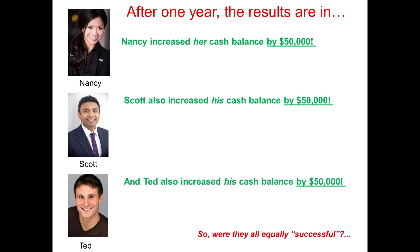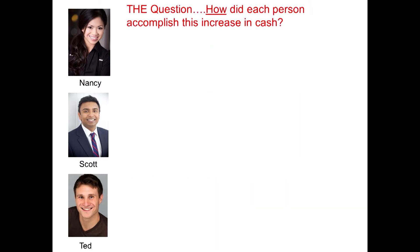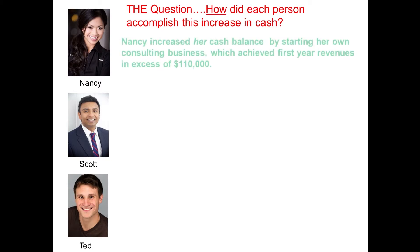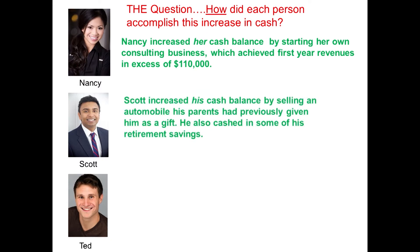So were they all equally successful? The question is how did each person accomplish this increase in cash? Nancy increased her cash balance by starting her own consulting business, and her first year revenues were in excess of $110,000. Obviously that's not the same as her cash increase because she had expenses. How did Scott accomplish his $50,000 increase? He sold an automobile that his parents had given him as a gift, and he also cashed in some of his retirement savings. But his cash did increase by $50,000.